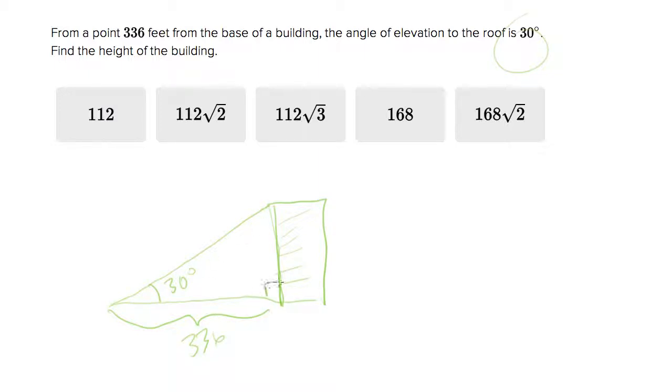Now, this triangle, because we know it's a right angle over here, we know that it's a 30, 60, 90 triangle.